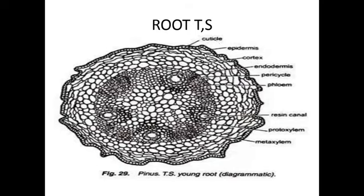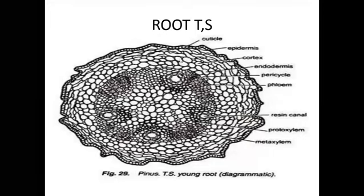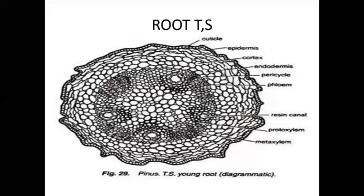Beneath the epidermis, the cortex is present. The cortex is divided into two sub-portions: one is outer cortex and second one is inner cortex. The outer cortex is made by collenchyma tissue, which is clearly visible.